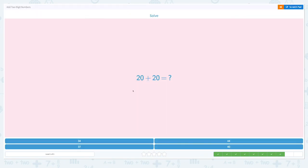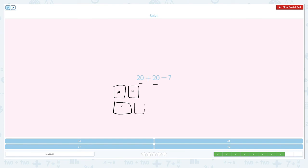Solve: 20 plus 20. Now 20 means I have 2 tens blocks. And another 20. I need to add 2 more.